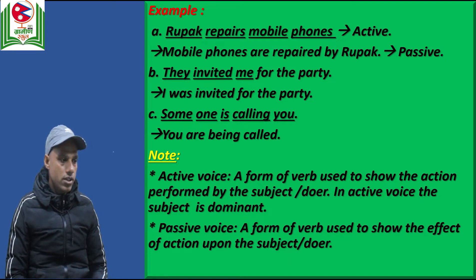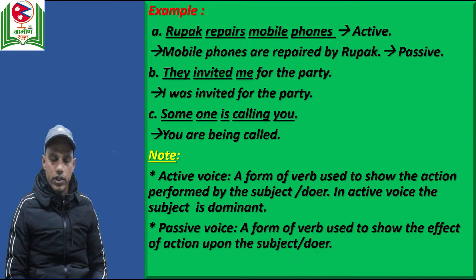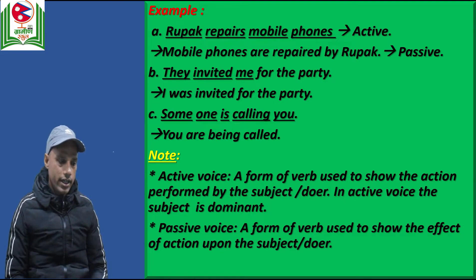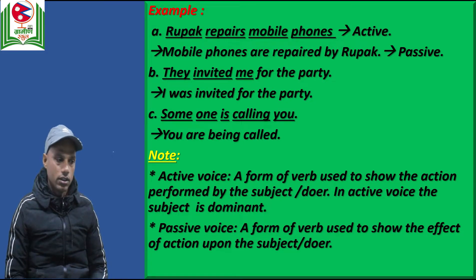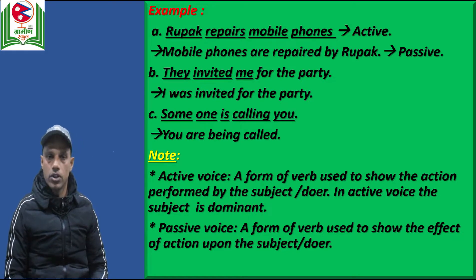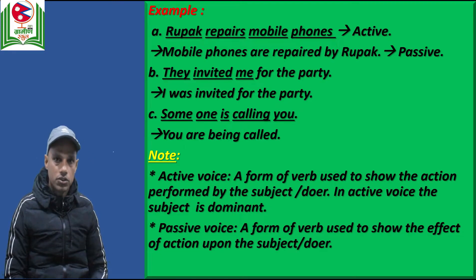From the above examples you can notice and generalize that active voice is a form of verb used to show an action performed by the subject or doer. In active voice the subject is dominant. For example, 'Rupak' is the subject, 'repairs' is the verb, and 'mobile phones' is the object — it follows the subject-verb-object pattern. The form of the verb in active voice shows the action performed by the subject.